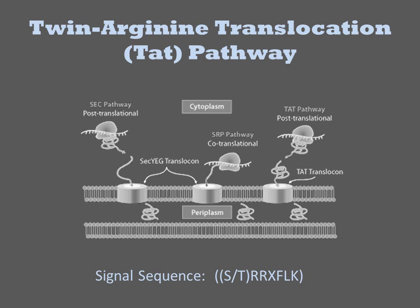There is another route by which a protein can get to the periplasm called the TAT pathway. Here, the signal sequence is a short peptide that can be anywhere in the sequence. The main difference between TAT and SEC is that proteins are transported after folding by TAT, while SEC transports the protein in an unfolded state.